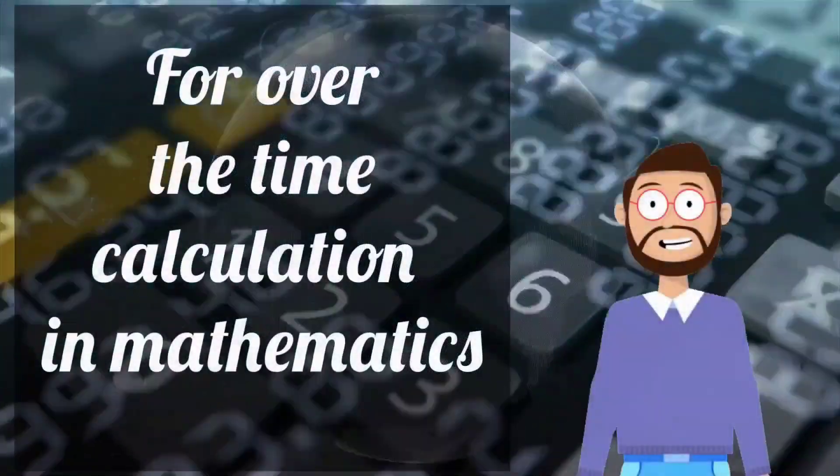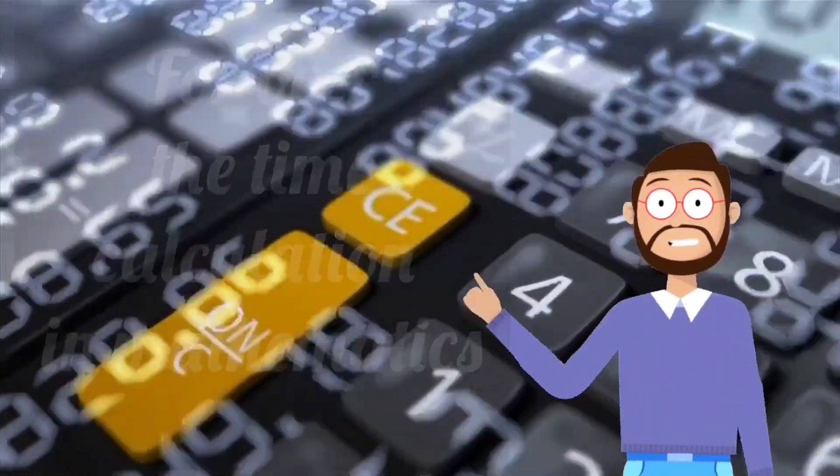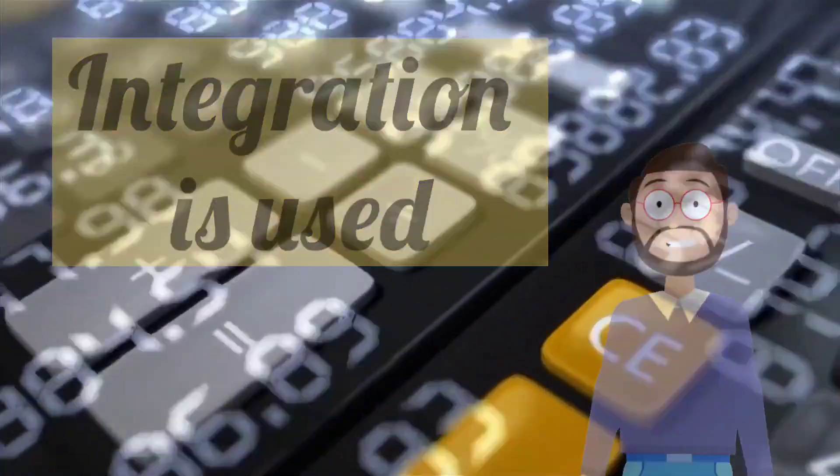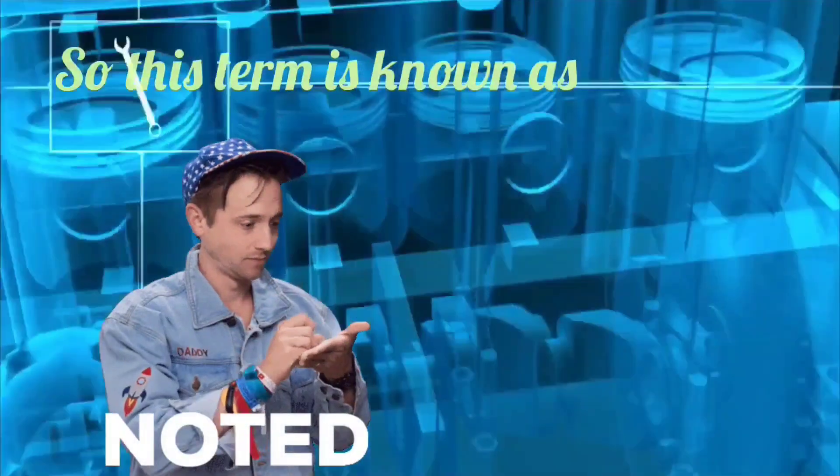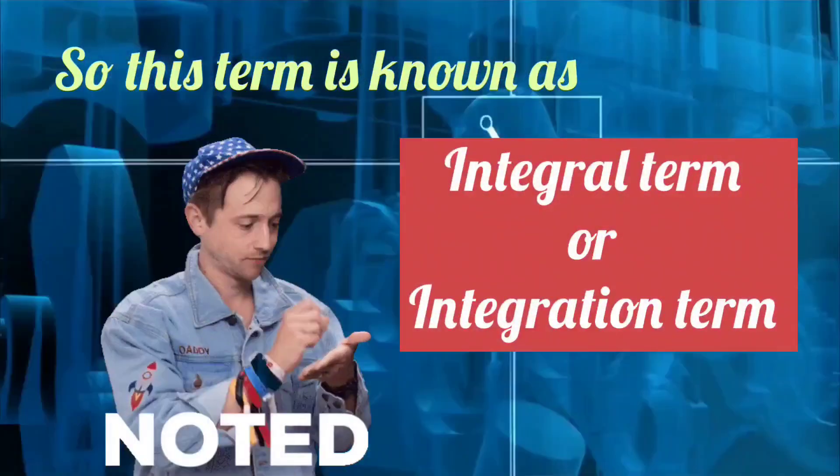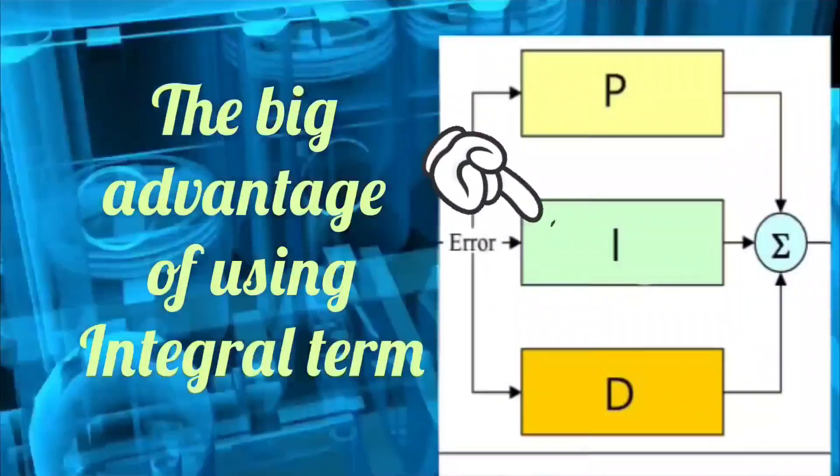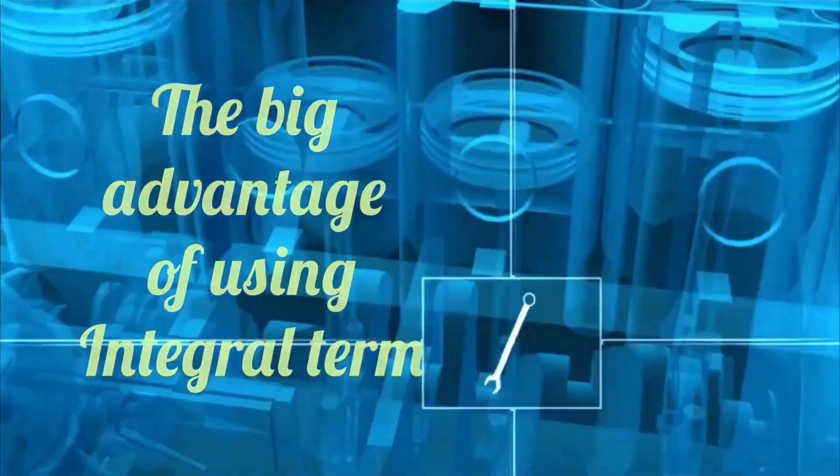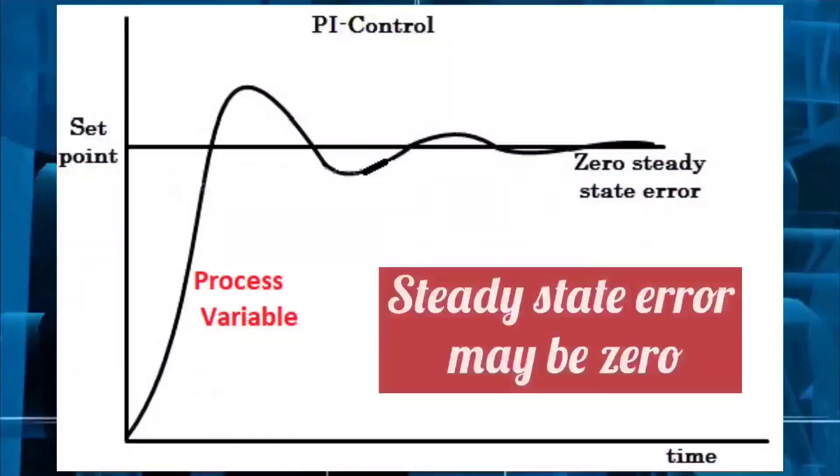Now because in mathematics, integration is used for over the time calculation. Therefore, this term is called integral or integration term. Using the integral term, the steady state error becomes zero.